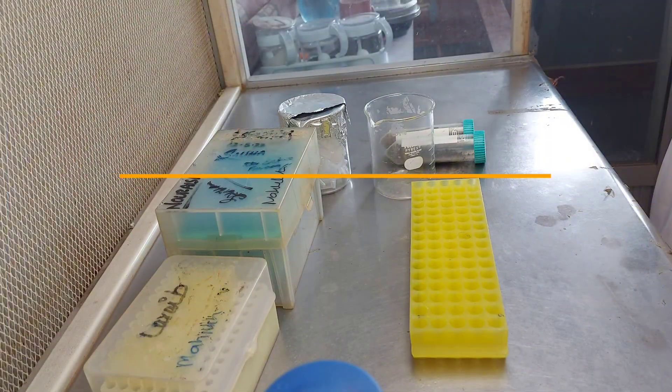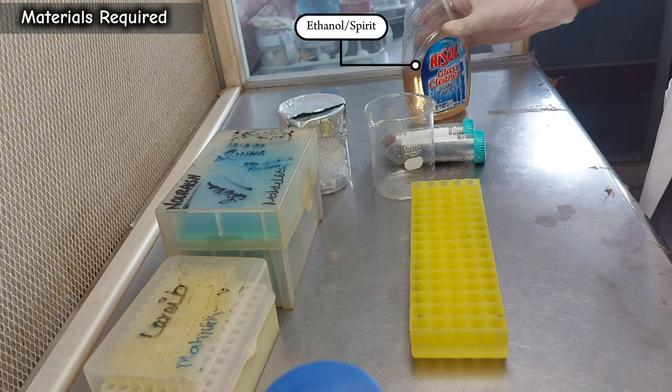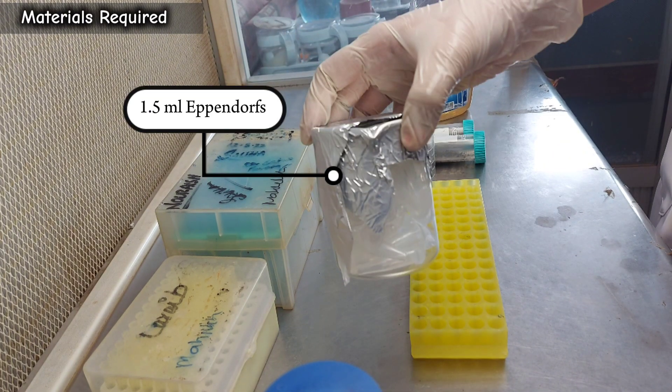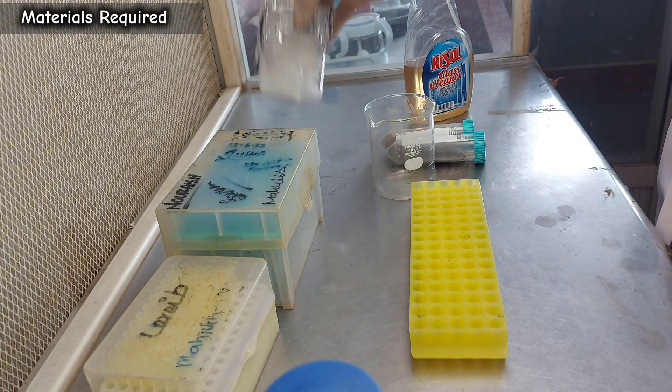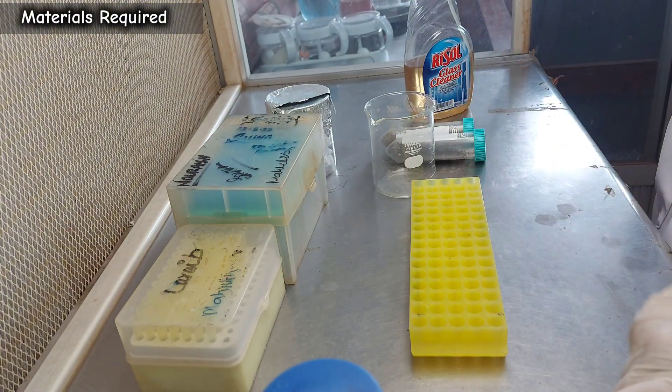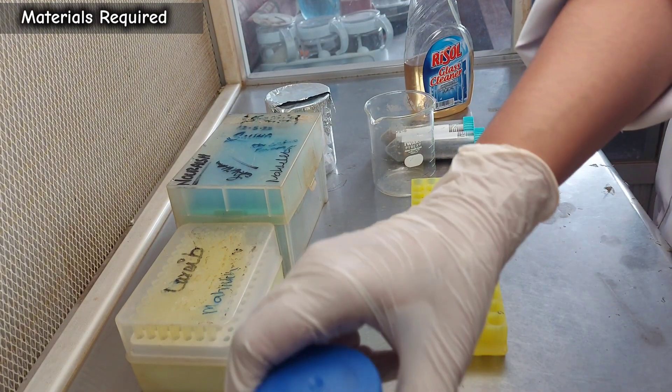To begin, ensure you have the following: sterilization materials such as ethanol or spirit spray, autoclaved 1.5 milliliter Eppendorf tubes, autoclaved blue and yellow micropipette tips, a 1000-microliter and a 100-microliter micropipette, and autoclaved distilled water.